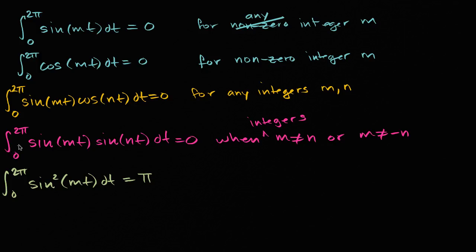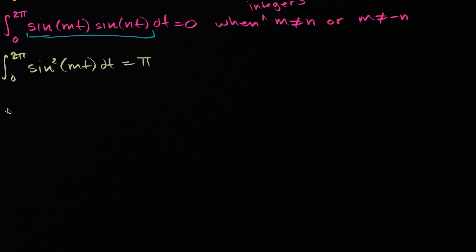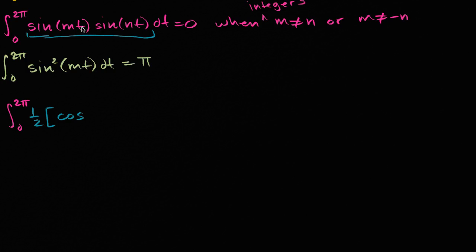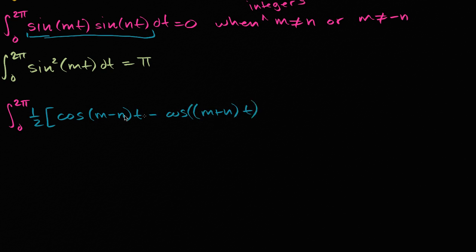Now how are we going to do that? We can rewrite this original integral using a product-to-sum formula. So rewriting this integral, it's the integral from zero to two pi of one-half times cosine of (m minus n)t minus cosine of (m plus n)t. This is just a trig identity — the product-to-sum formula when you're taking the product of the sines of two different things. And of course this is going to be dt.